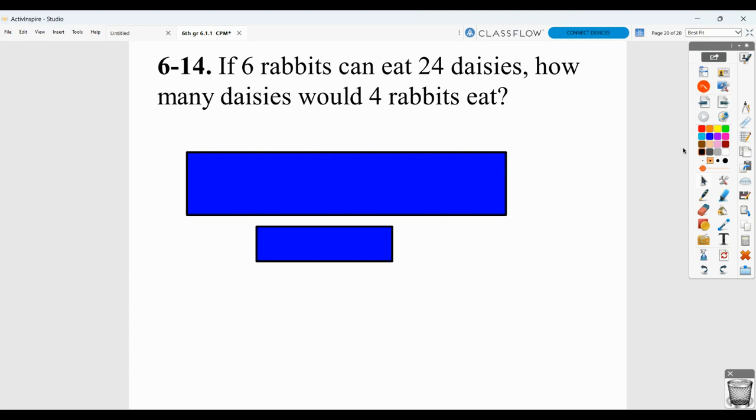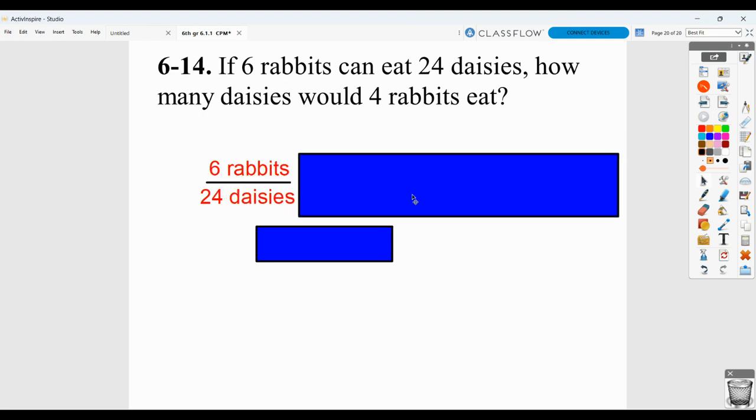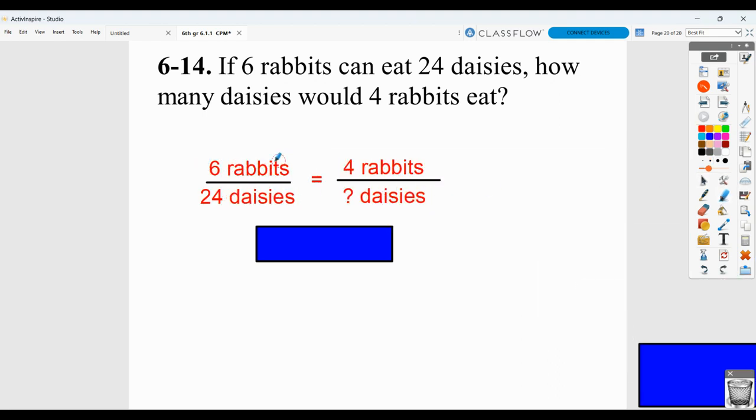If 6 rabbits can eat 24 daisies, how many daisies would 4 rabbits eat? So, I set this up like a proportion. 6 rabbits eating 24 daisies. 4 rabbits eating an unknown amount of daisies. And then I can do my cross products. 24 times 4. So, I'm going to multiply these two, because they are numbers that we know that are diagonally crossing each other. And then I'm going to divide by that third value, which is 6. So, it ends up being 4 times 24 and then divide it by 6. I want to be clear that this is not the only way to do it. But, whatever way you did, please show your work.